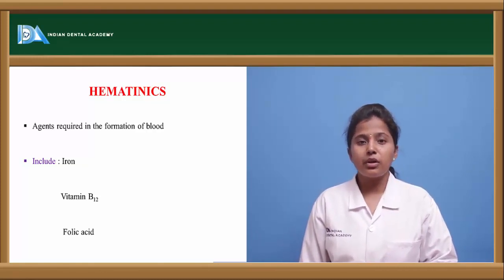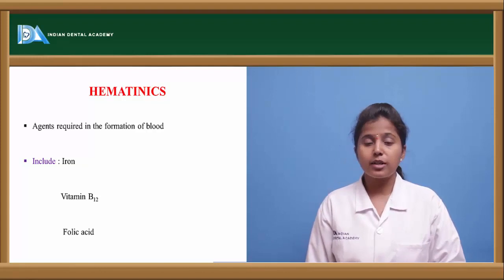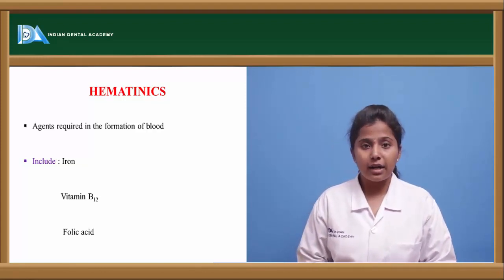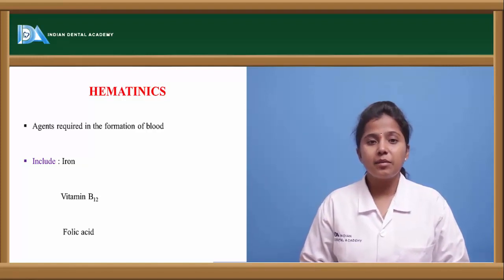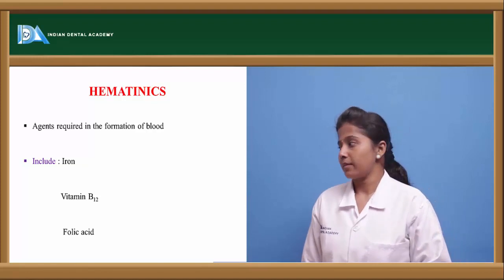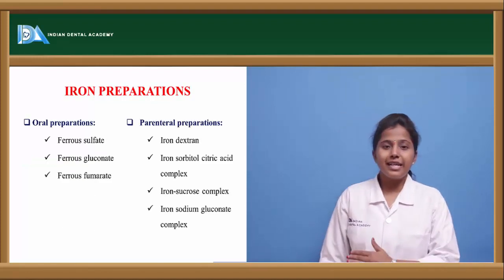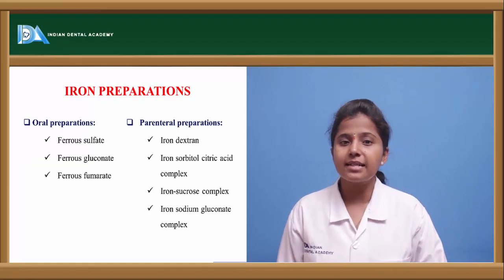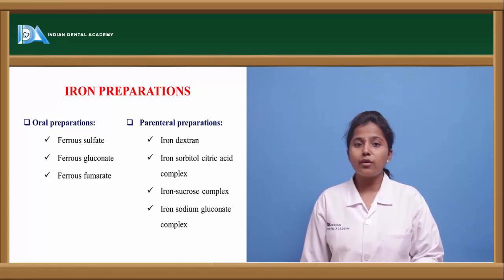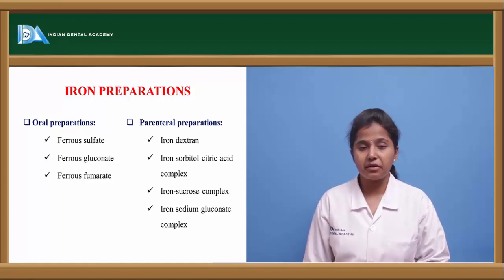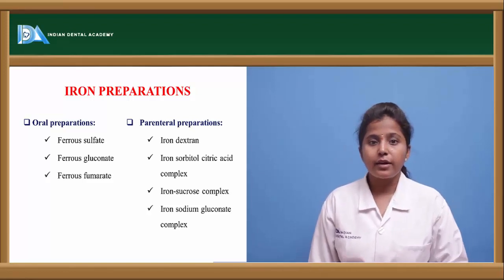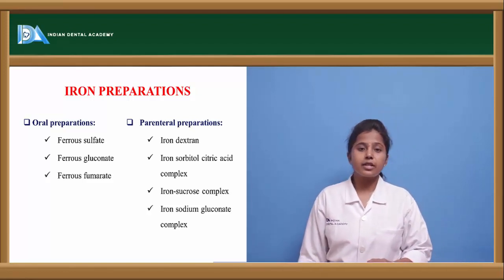Iron plays a very important role in the formation of blood because iron is the compound present in hemoglobin in the state of ferrous or ferric form. Iron exists and is prepared in two forms: one is oral form and the other is parenteral form. The oral forms of iron include ferrous sulfate, ferrous gluconate, as well as ferrous fumarate.